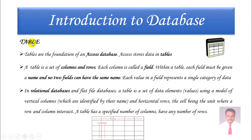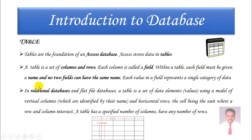Next, what is a table? Tables are the basic unit of storage in a database and are the foundation of an Access database. If you want to store any information, you need a table — without a table, you cannot store any information. A table is a set of columns and rows. Within a table, each field must be given a name, and no two fields can have the same name.